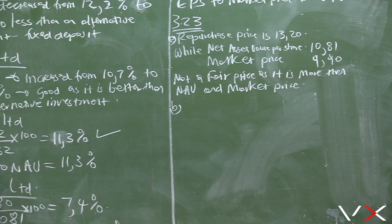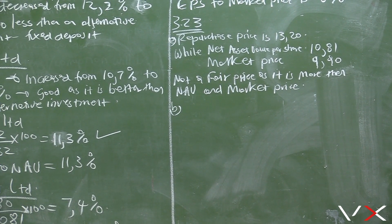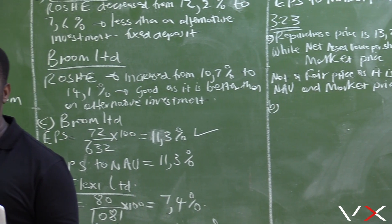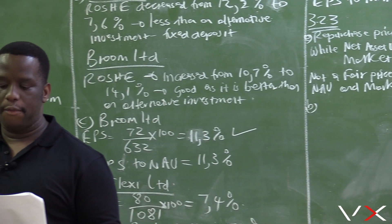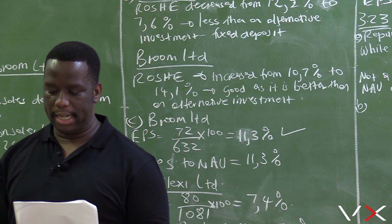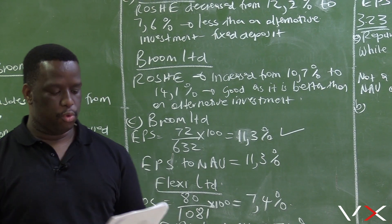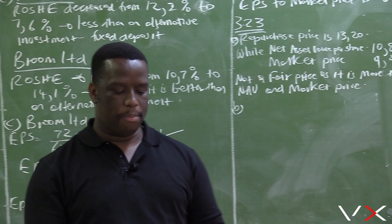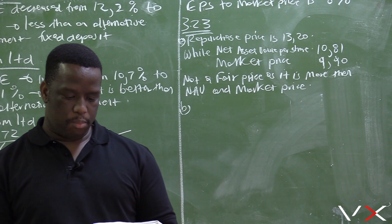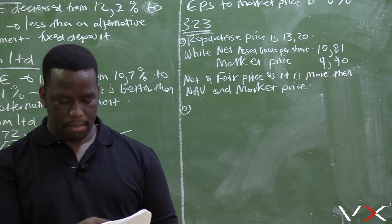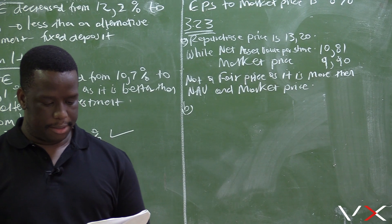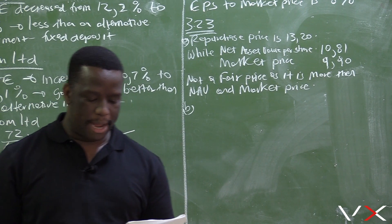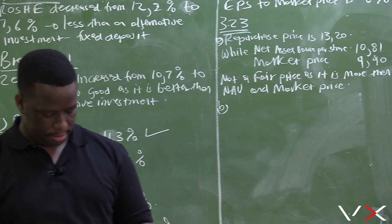Part B asks us to calculate the number of shares that Bob purchased in Broom Ltd with the money he received from the share buyback at Flexi Ltd, for two marks.